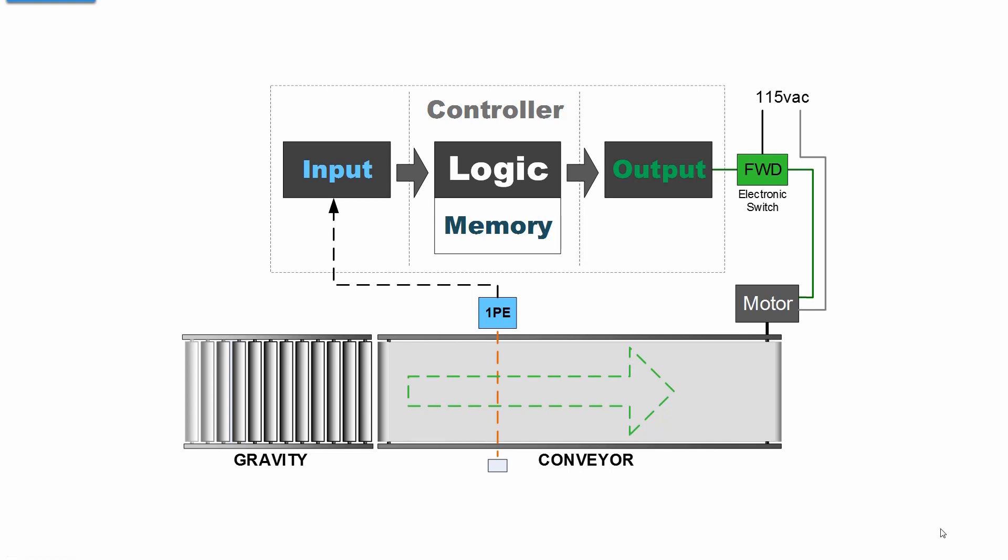The photoelectric switch is placed where you want the object to stop. When the object interrupts the optical path of the sensor, the controller knows that the object has arrived. The output of the controller operates electronic switch contacts, just like the push button, to run the conveyor until the optical path of the photosensor is blocked. When the path is blocked, then the conveyor stops.